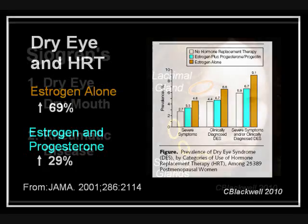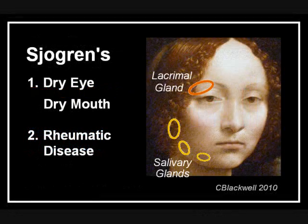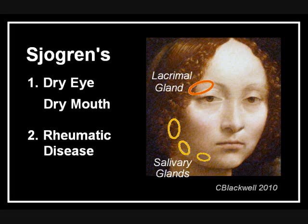A less common cause is Sjogren's Syndrome. This is a disease where the immune system is triggered to attack both the lacrimal and salivary glands, resulting in dry eye and dry mouth. One form of Sjogren's involves just salivary and lacrimal glands, while another form involves both glands with the addition of rheumatoid arthritis.